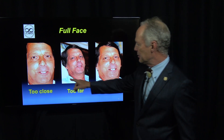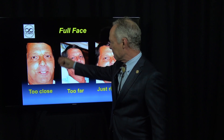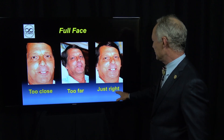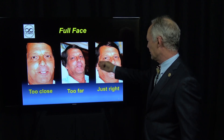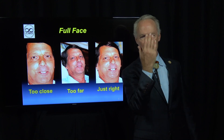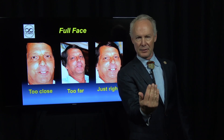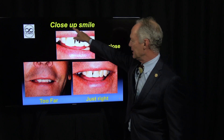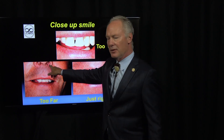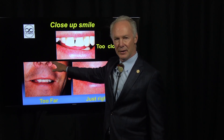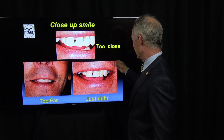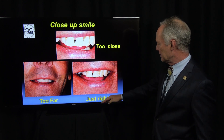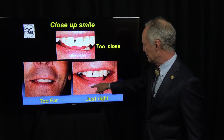For the full face: this is too close — you want to see a little bit outside the ears. This is too far and the patient is tipped back. This is just right: you want to see the ears on each side, and you'd like the face to be parallel to the camera lens. For the close-up smile: too close means you're not seeing the corners of the mouth. Too far and you see distracting things like the nose and hair in the nose. Just right is just past the corners of the mouth — don't get the nose, don't get the chin. You want to see the smile.